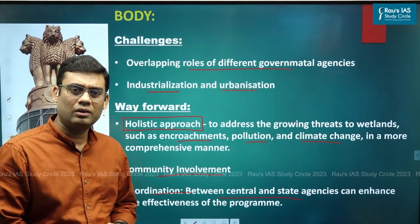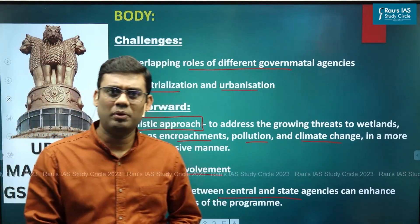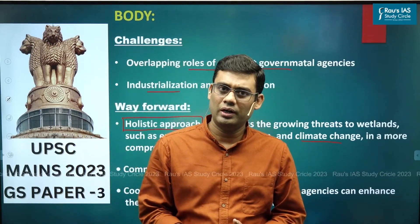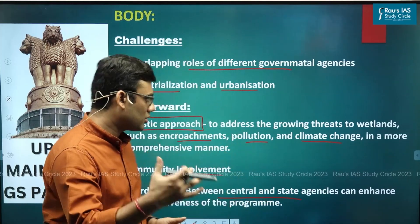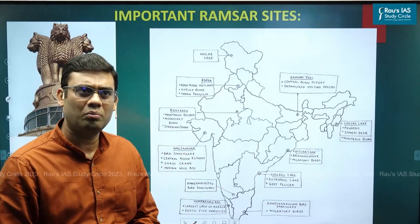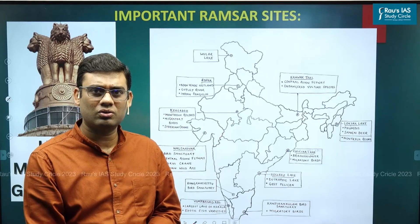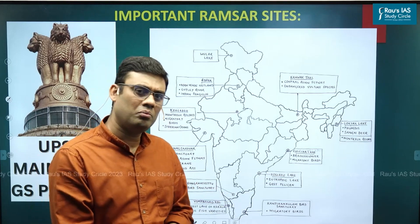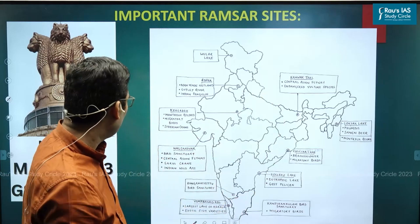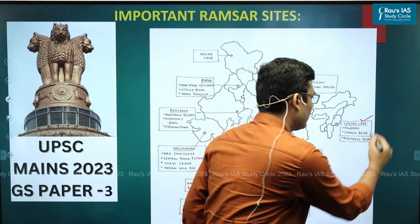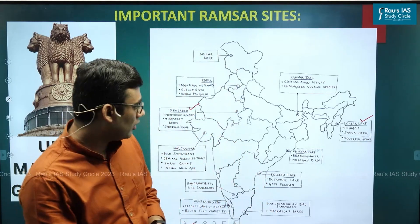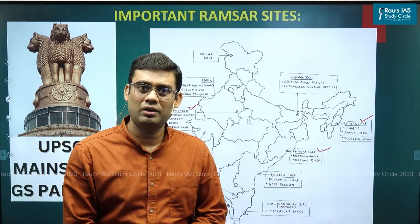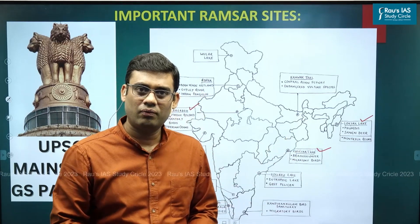Coming to the second part of the question — wetlands of international importance, the Ramsar sites in India. Given the word limit, the best approach is to show them on a map of India with a few details for an overall overview. Some important ones highlighted include Loktak Lake and Keoladeo — both Montreux Record sites. Chilika Lake is also included; it was earlier a Montreux Record site but was later removed due to successful conservation efforts. These three definitely find a mention.